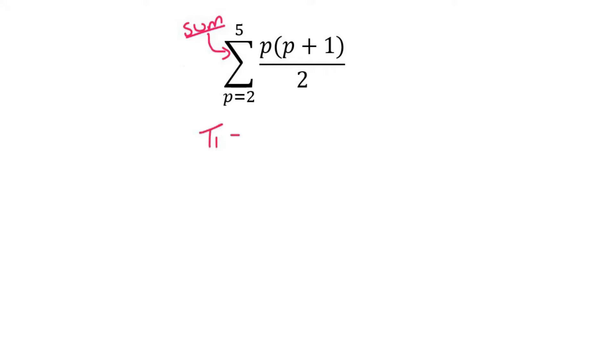So what we usually do first is we find term 1, term 2, and term 3, just to see if we have an arithmetic or geometric pattern. To find term 1, you plug in whatever this number is in the place of P. So that's going to be like that, and that will give us 3.